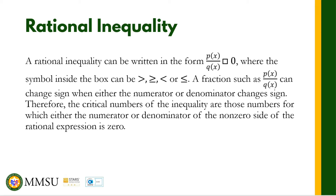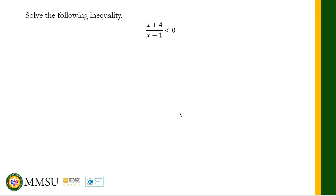The first problem is (x + 4) over (x - 1) is less than zero. To solve rational inequalities, we write all non-zero terms on the left part of the inequality. Since our given is already written in that form, we skip that step. Next is to solve for the critical numbers, which are the zeros of the numerator and zeros of the denominator.